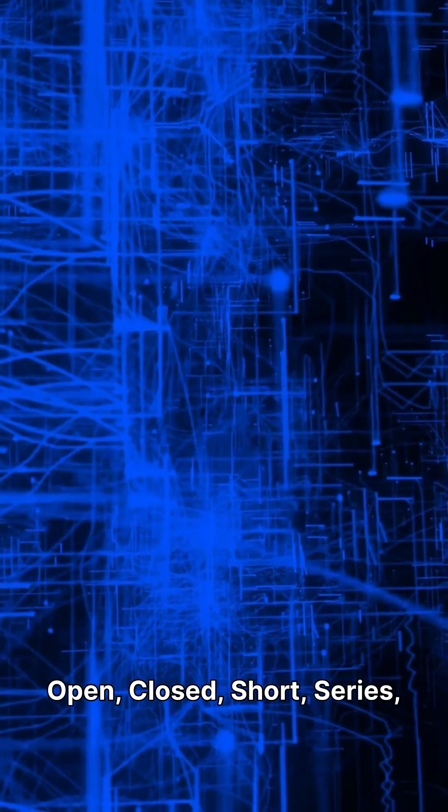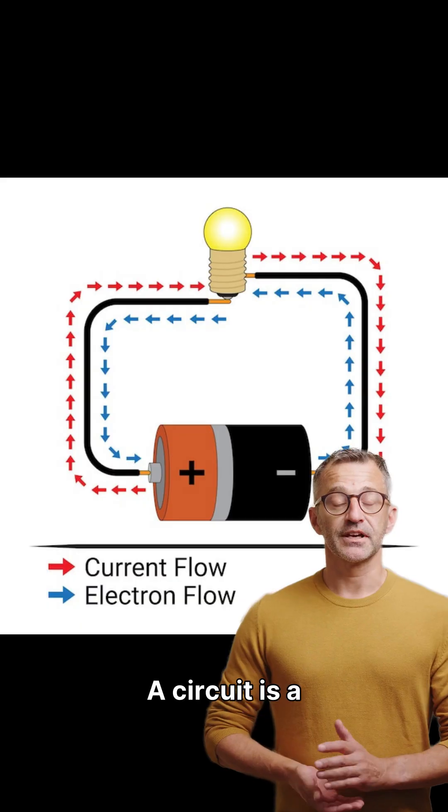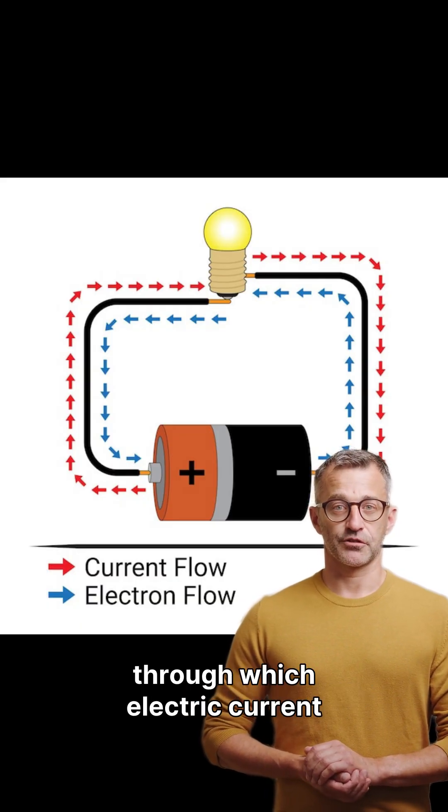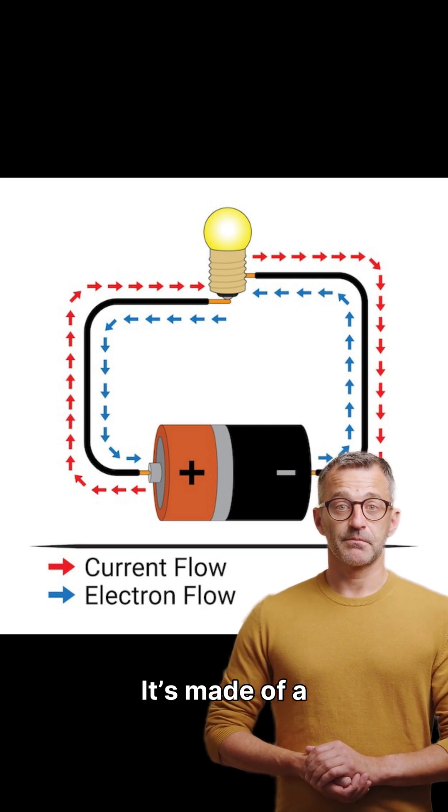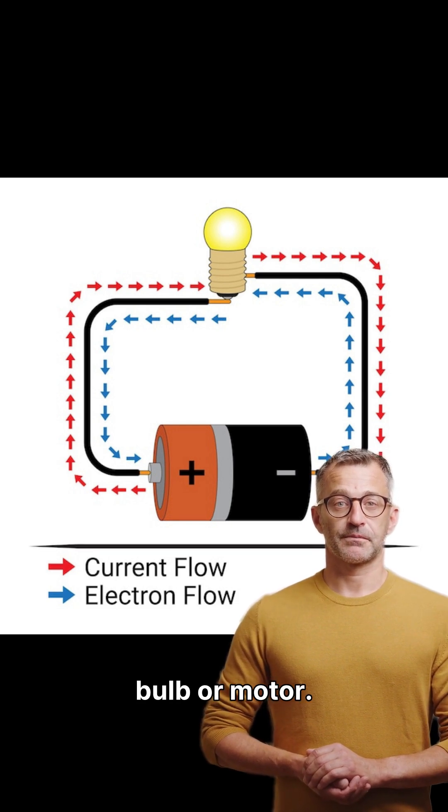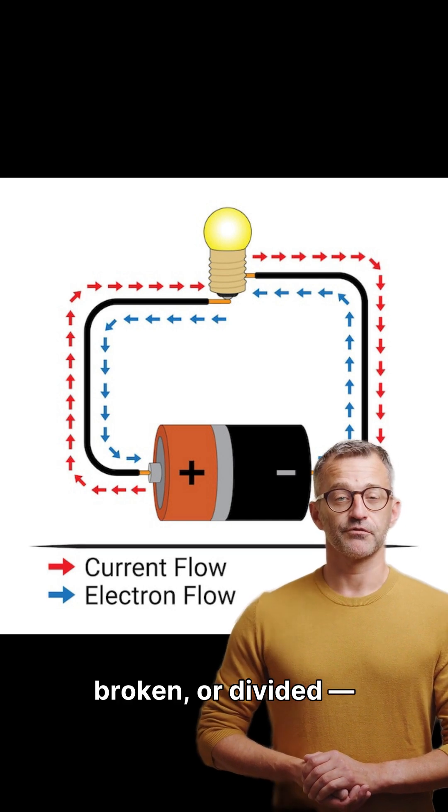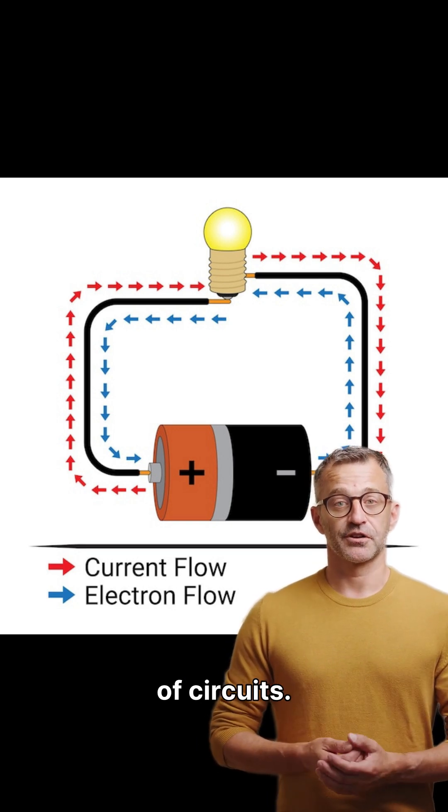Open, closed, short, series, and parallel. Let's dive in. A circuit is a closed loop or pathway through which electric current flows. It's made of a source like a battery, conducting wires, and a load such as a bulb or motor. Depending on how this path behaves—complete, broken, or divided—we get different types of circuits.